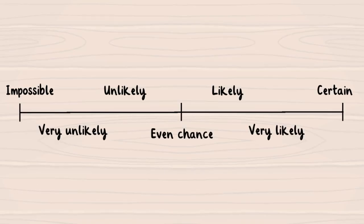The terms that we use to describe the likelihood of an event are impossible, very unlikely, unlikely, even chance, likely, very likely, and certain.